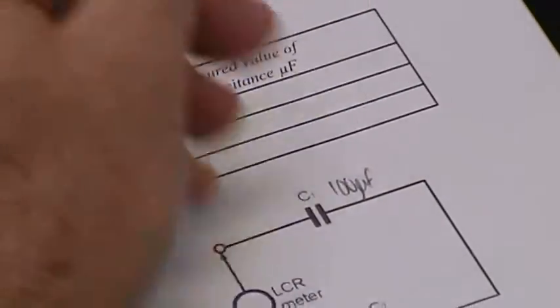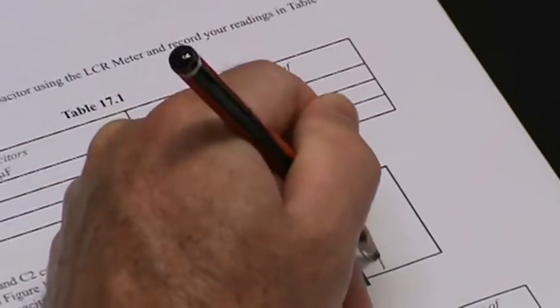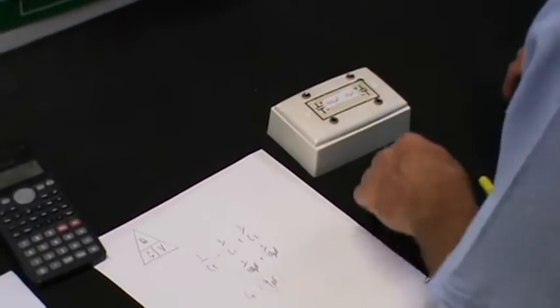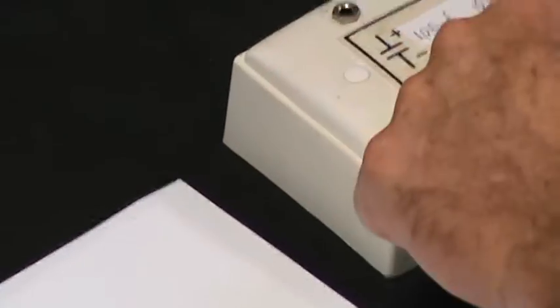C1 there, we're going to call that 100 mic, and C2 is 10 mic. Now these particular capacitors are polarized capacitors, which means they have a positive and negative.